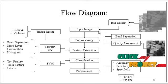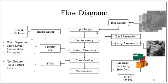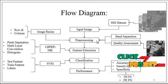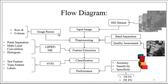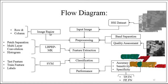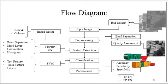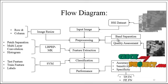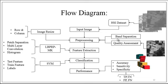Take any one image from the dataset. After taking the image from the dataset, preprocessing will be carried out. In this preprocessing step, we have considered mainly three things: the first one is image resize, the second one is band separation, and the third is quality assessment. First of all, we go to the band separation to separate the bands from the image.